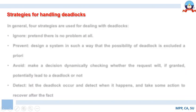Now let us understand some of the notable strategies used for handling deadlocks. The four important strategies are: first, you can ignore the deadlock, considering it will not have a significant effect on the overall performance of the system. Second, you can initiate a preventive measure — design a system such that the possibility of deadlock is excluded a priori. Third, you can avoid the deadlock. And fourth, you can detect the deadlock.